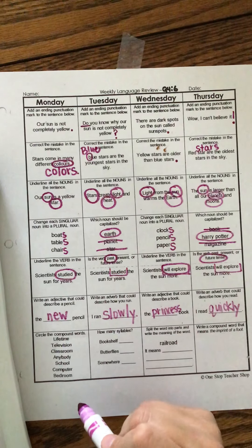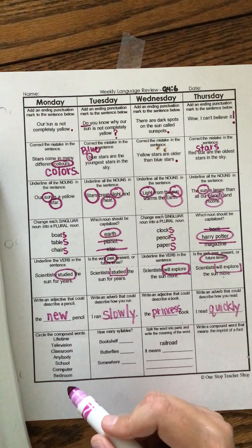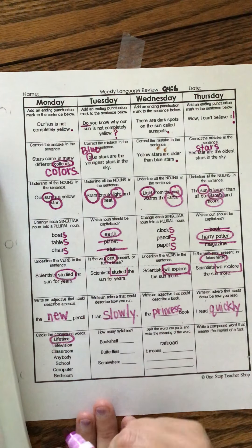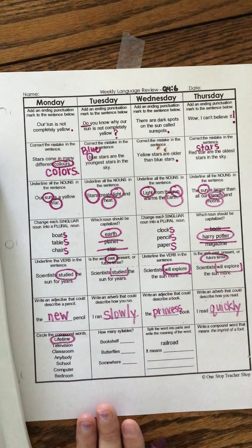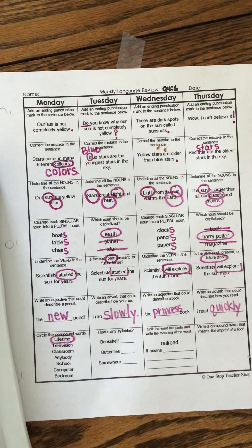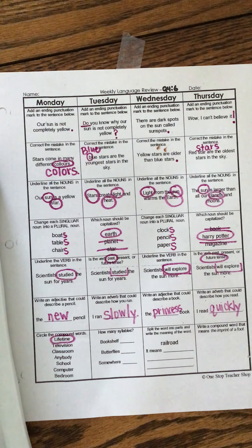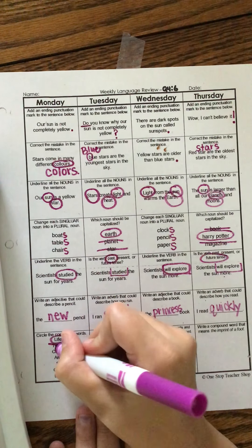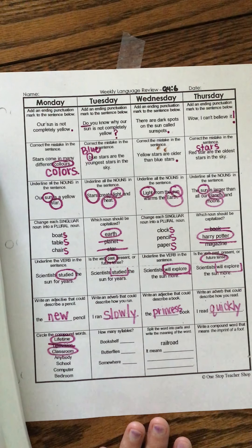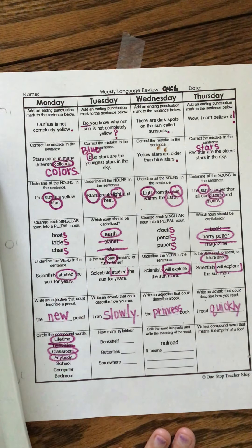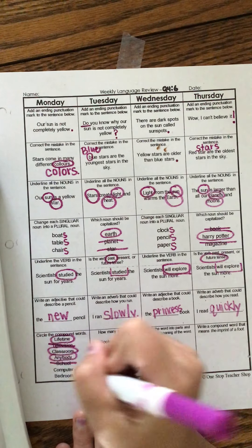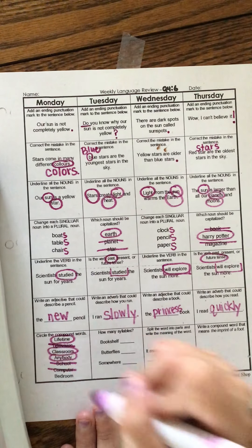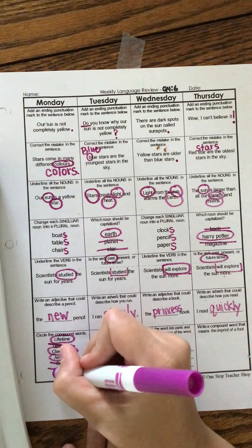All right. Circle the compound words. Remember compound words are two words that get married and they make a new word with a new meaning. Life and time, lifetime. Lifetime. Okay. Tele and vision. Hmm. This one's a tough one. So tele is considered, if you were to take the word television apart, vision can stand alone, but tele could not. Okay. So this is not a compound word for us. Class and room. Classroom. Anybody. Okay. School. Is school two words? No way. Computer. Comp-U-ter. Is that two words? No. Bedroom. Bed and room. All righty.